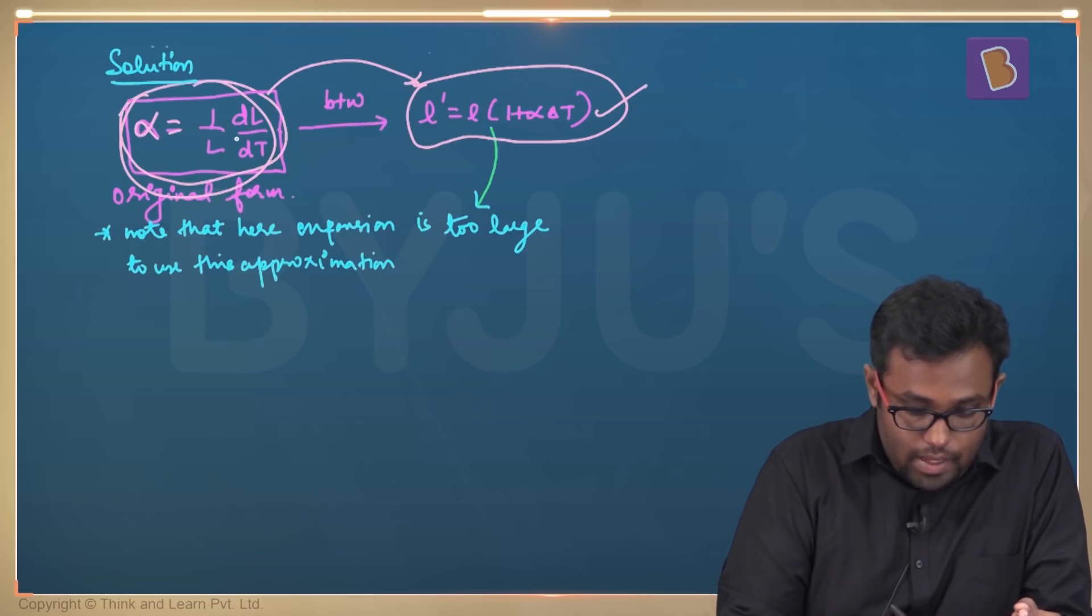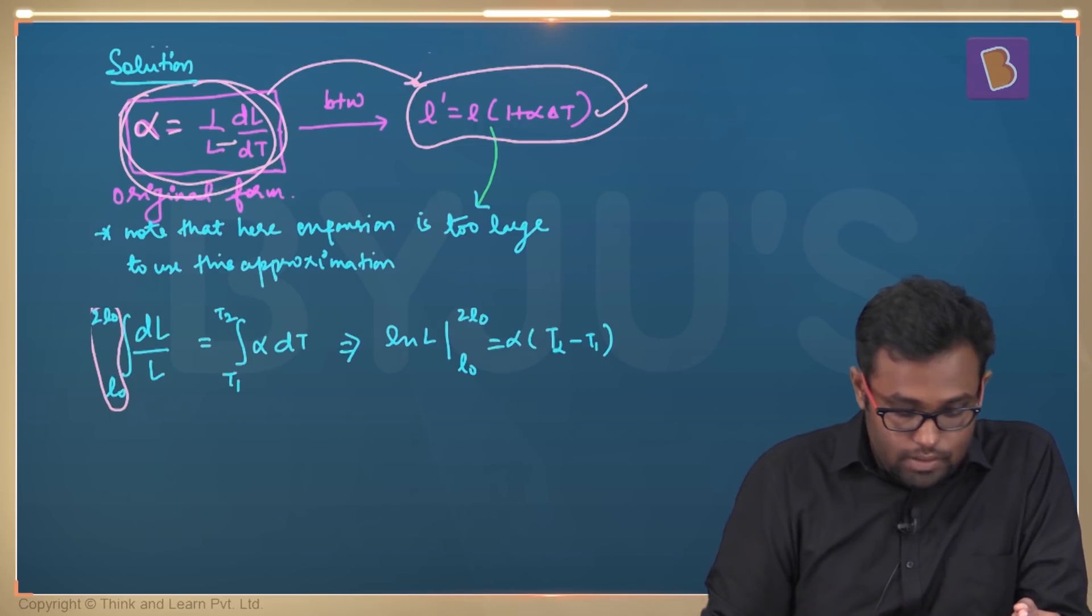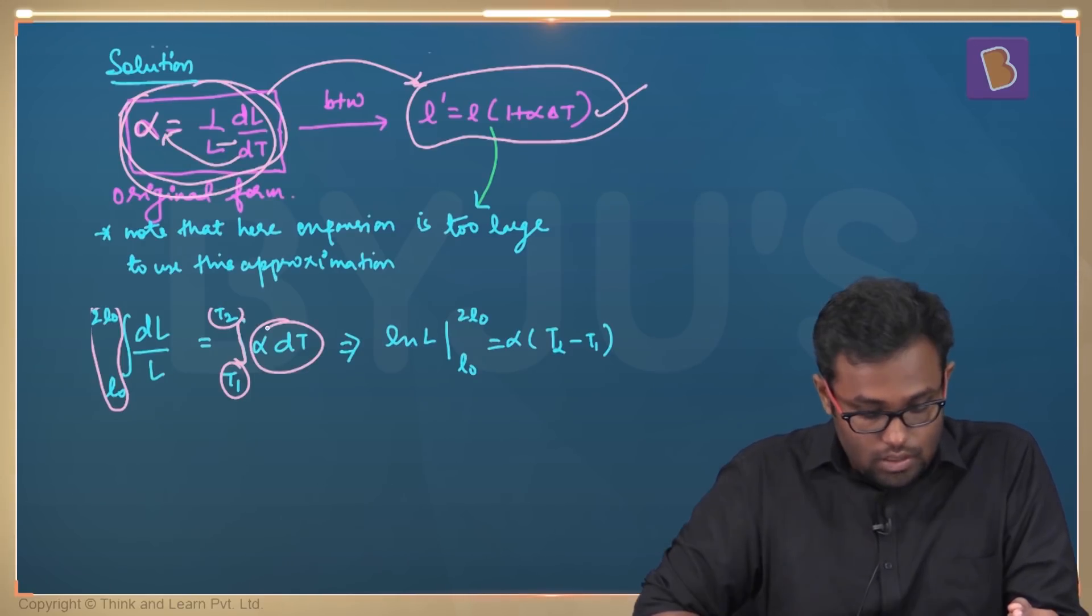From this expression, I can keep this L down here and take this DT on the other side and integrate both sides. I'm going to integrate DL by L from L0 to 2L0 because that is the increase in your length. And this integration happens from T1 to T2, from temperature 1 to temperature 2 because this alpha DT is sitting there here.